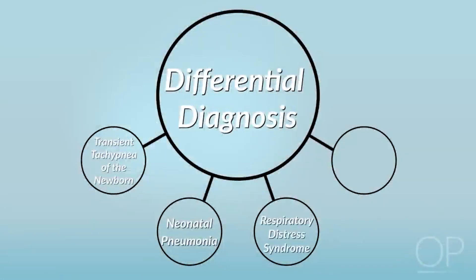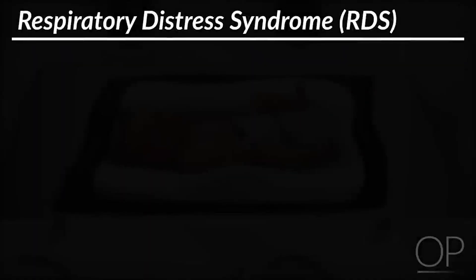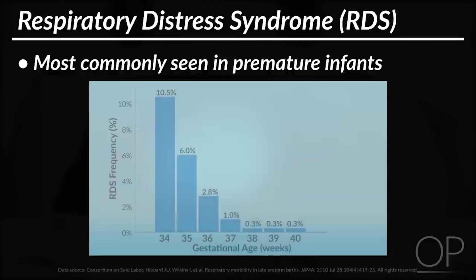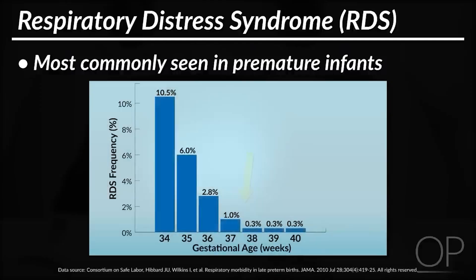Respiratory distress syndrome (RDS) is a disease most commonly seen in premature infants, with the frequency decreasing significantly after 37 weeks gestational age.